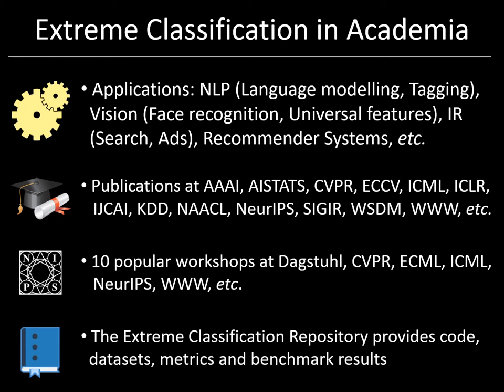So if I look back over the last seven years, the research community has made remarkable progress. Our classification accuracies on benchmark tasks such as tag prediction on Wikipedia have increased from 19% in 2013 to about 80% today, while our classifier model sizes have come down from terabytes to gigabytes. And in fact, even the classifier training times have come down by 10,000x for at least pre-trained features. So in that sense, the community has made tangible, significant progress.